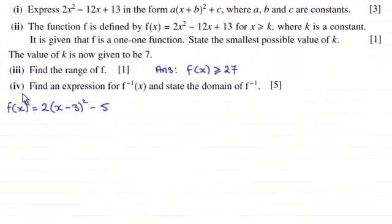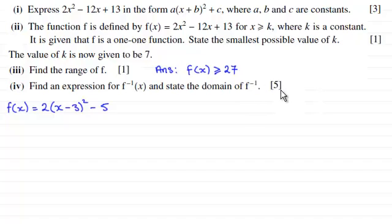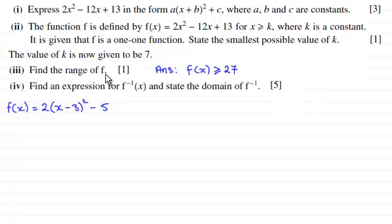In the fourth part of this question we've got to find an expression for the inverse function of f of x and state the domain of the inverse function for five marks. As a reminder, in the first part we had to express 2x squared minus 12x plus 13 in a particular completed-square form. For k equals 7 we were asked to find the range of f, and that answer was f(x) is greater than or equal to 27. You may find these parts useful when doing part 4.